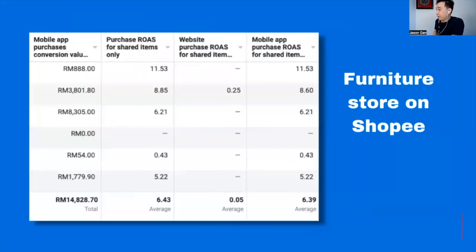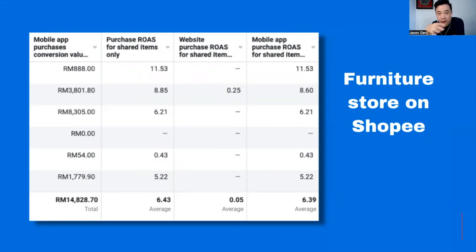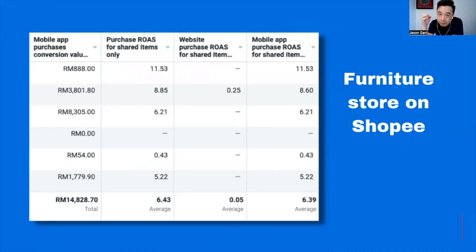Another example is a furniture store on Shopee in Malaysia. The fifth campaign at the bottom with 0.43 ROAS is their Tier 1 — they don't make money on Tier 1 because its function is to reach new people and pull in new audiences. Almost nobody buys the first time they see an ad. But by capitalizing on intent with the right retargeting, other campaigns were showing 11, 8, 6, and 5.22 ROAS.